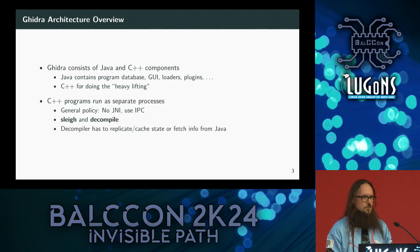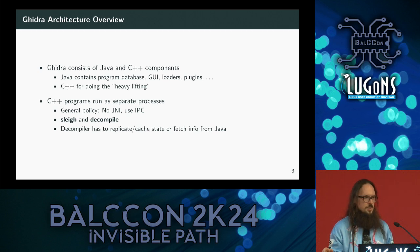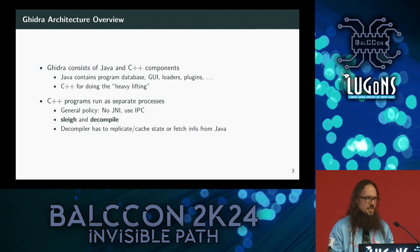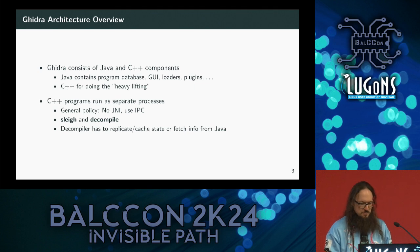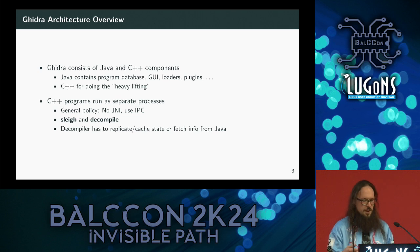The C++ code is used for the heavy lifting, which is the decompilation itself and SLEIGH. These run as separate processes because Ghidra has the policy that you don't use JNI — they don't want you to crash the whole program if your memory-unsafe code crashes. The Ghidra decompiler is prone to crash; you don't notice because they're catching segfaults and throwing an exception. Everything that is not Java has to run as a separate process.